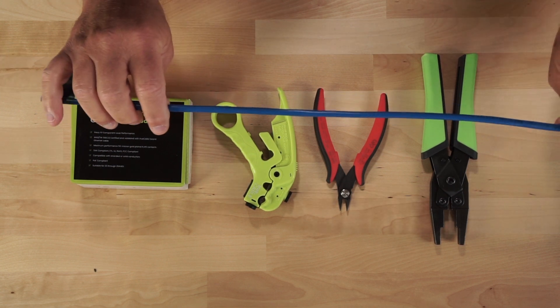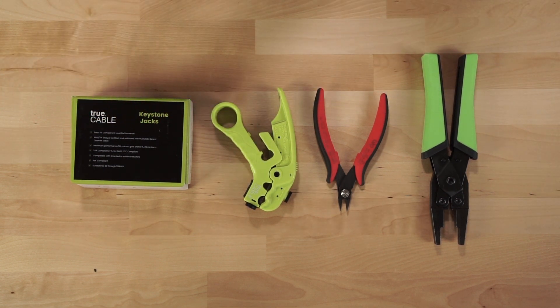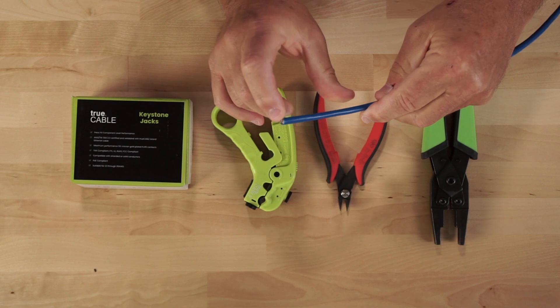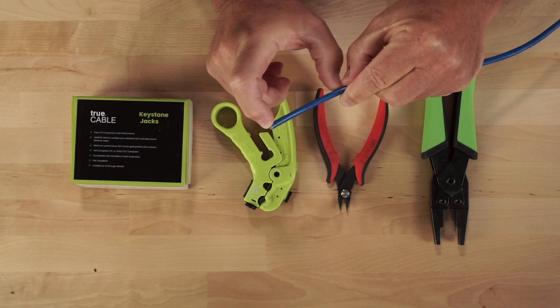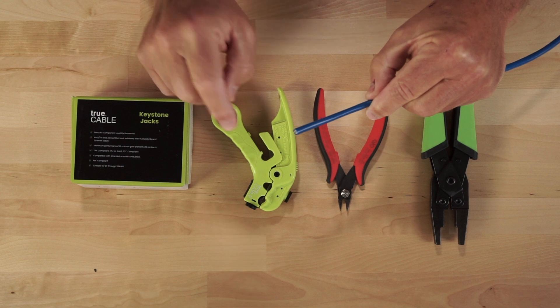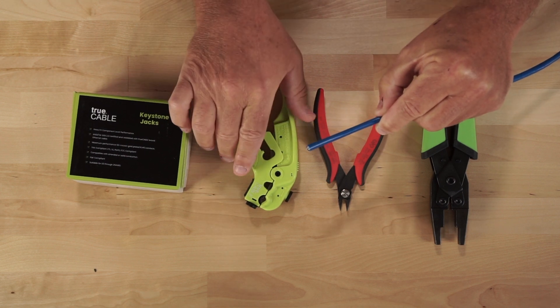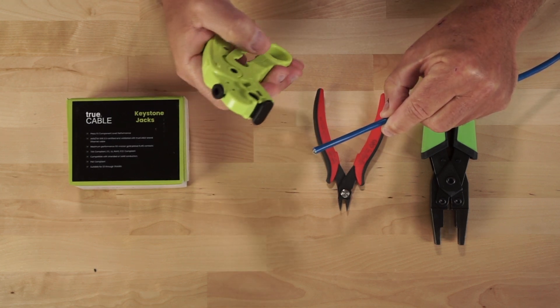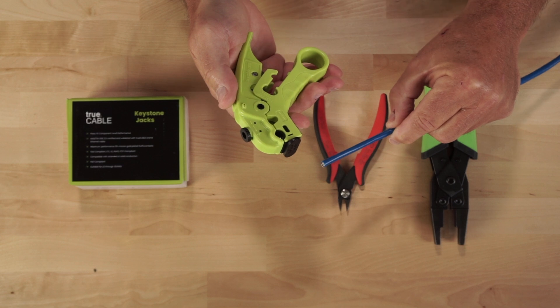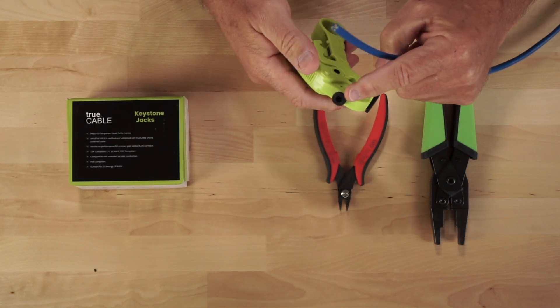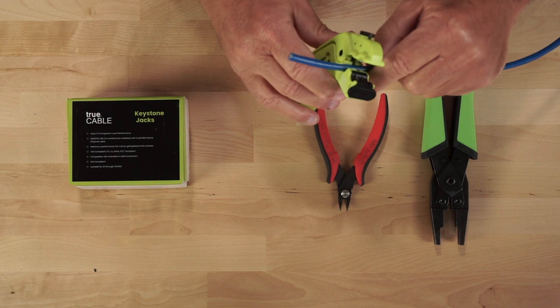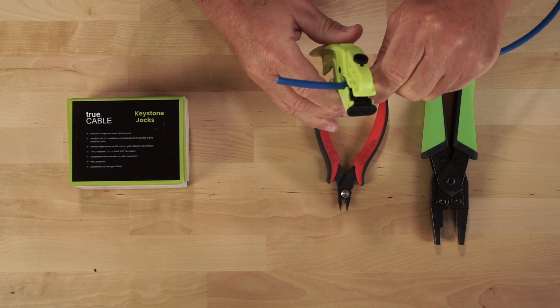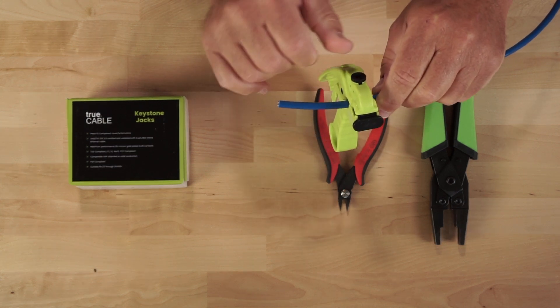So first thing we're going to do is we're going to cut our cable and I'm going to cut off about two and a half inches. Well, not the whole cable, but we're going to take the jacket off and you have to be really careful not to damage or remove the shield. So with the stripping tool, the blade has an adjustable knob at the top, so what you want to do is do a couple of practice cuts at first so you can get your blade adjusted.